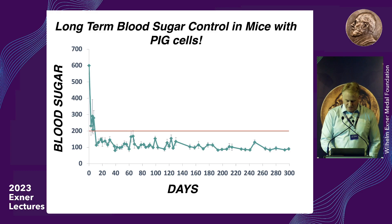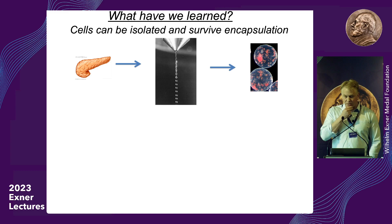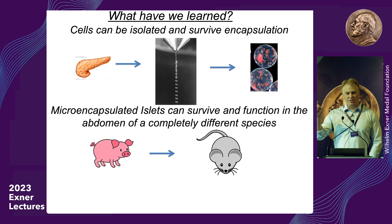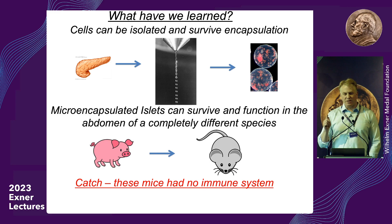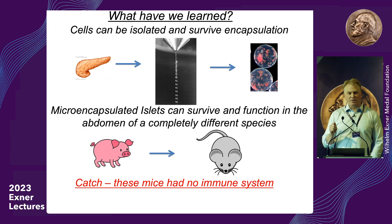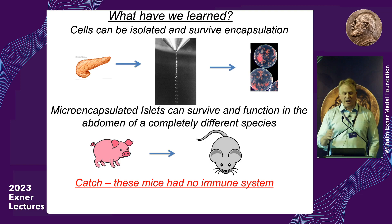But there are things we learned and things we still haven't solved. This teaches us we can take islets from a completely different animal and cure diabetes in a rodent — but there was a catch. In this experiment, the rodents didn't have an immune system. If you do the exact same experiment in a normal mouse with a strong immune system, the devices fail, just like back in 1980.